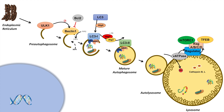The next steps involve a nucleation process. ULK1 actually phosphorylates and activates Beclin-1, and there is another PI3K complex that induces the formation of PIP3, or phosphoinositol triphosphate. The increasing concentration of PIP3 leads to the recruitment of WIPI proteins, which lead to the recruitment of other proteins such as P62 and NBR1, which are cargo receptors.